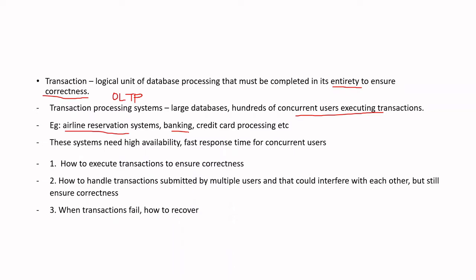For example, in a banking system, if you want to transfer a certain amount from my account to your account, it involves deducting the amount from my account and then updating your account. It is a sequence of steps. Such operations are called transactions. In banking, airline, or railway reservation systems, millions of users are actually accessing the system at a time and doing all these operations.